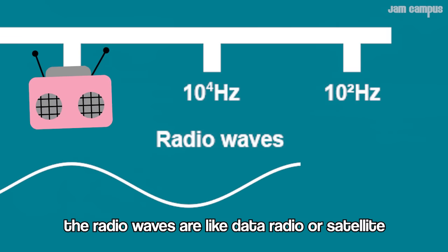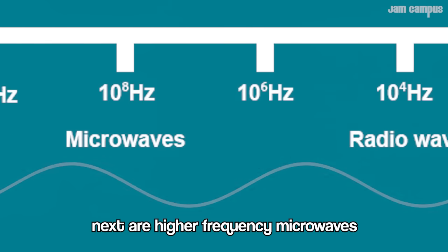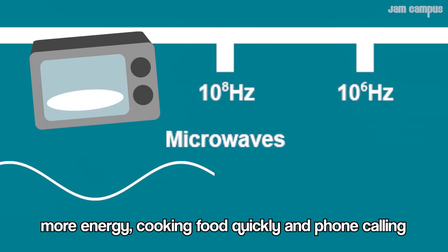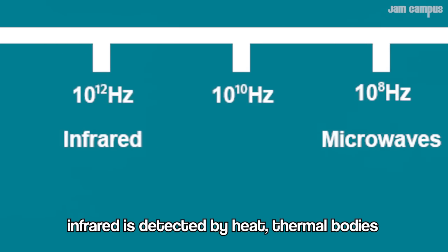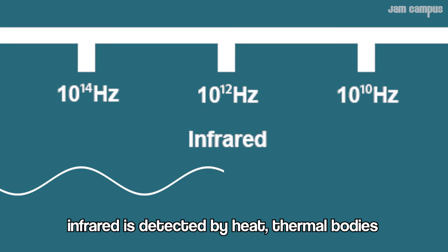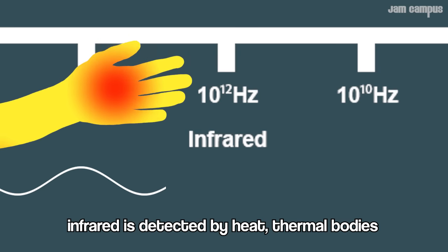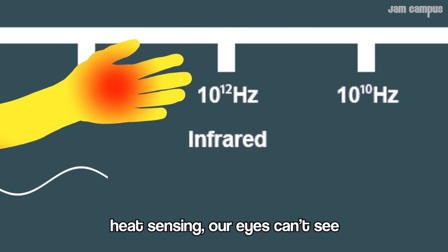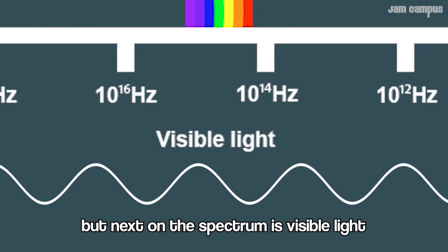The radio waves are like data, radio, satellite. Next, to higher frequency, microwaves — more energy, cooking food, click the phone calling. Infrared is detected by heat. More bodies, heat sensing — our eyes can't see it.